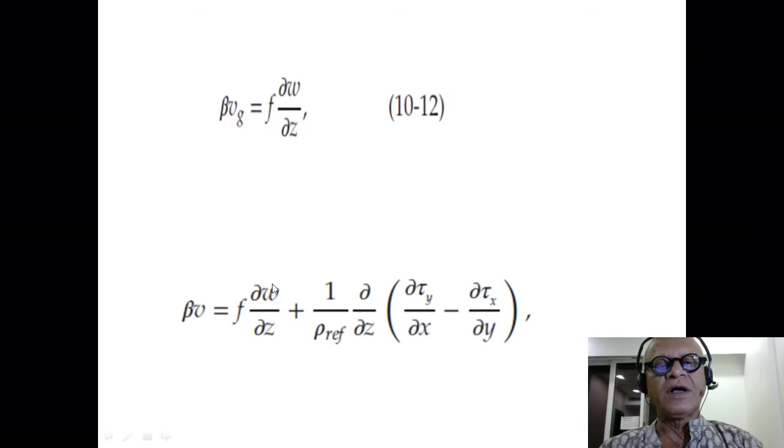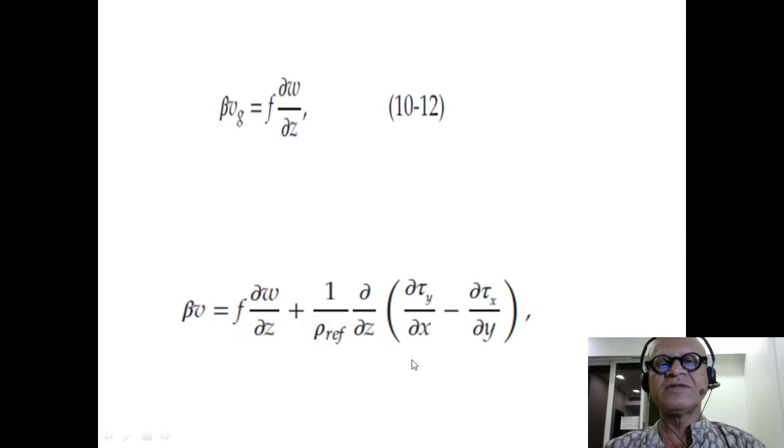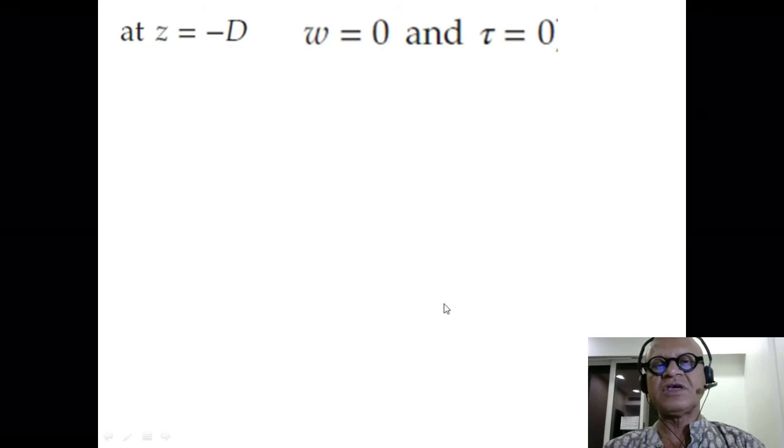You take cross derivatives of this, d/dy and d/dx, and you remember the expression for the interior flow, but now we are doing the surface of this. So that gives you beta v. Just taking d/dy of this: f dw/dz plus 1 over rho_ref d/dz (d tau_y/dx minus d tau_x/dy). All we did was take the x and y derivatives of the two equations and add them together.